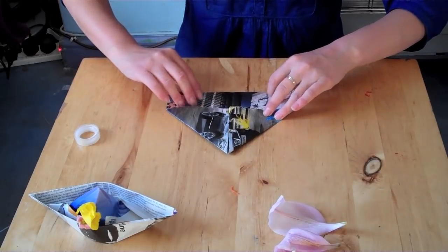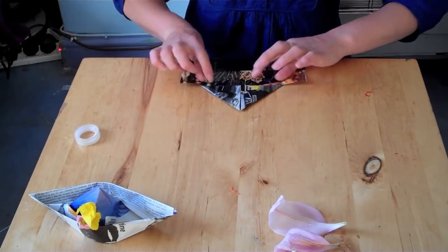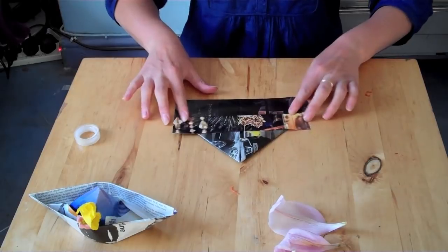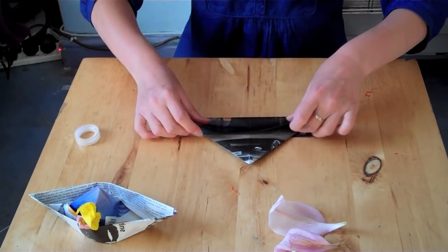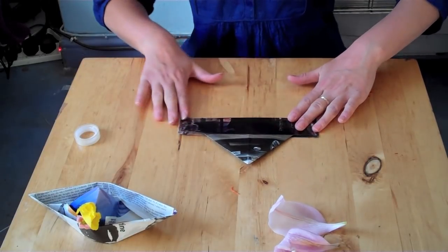then you fold a flap. Fold up like that, turn it over and a flap that way. So at this point you have a paper hat.